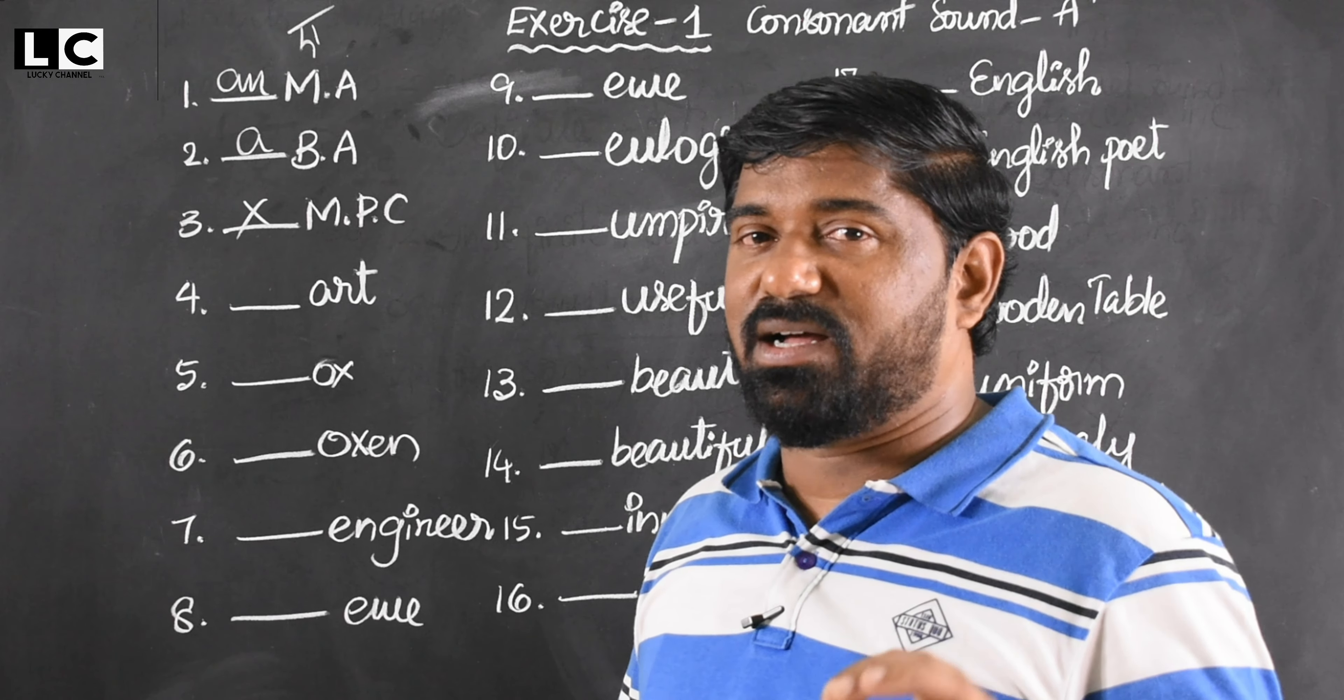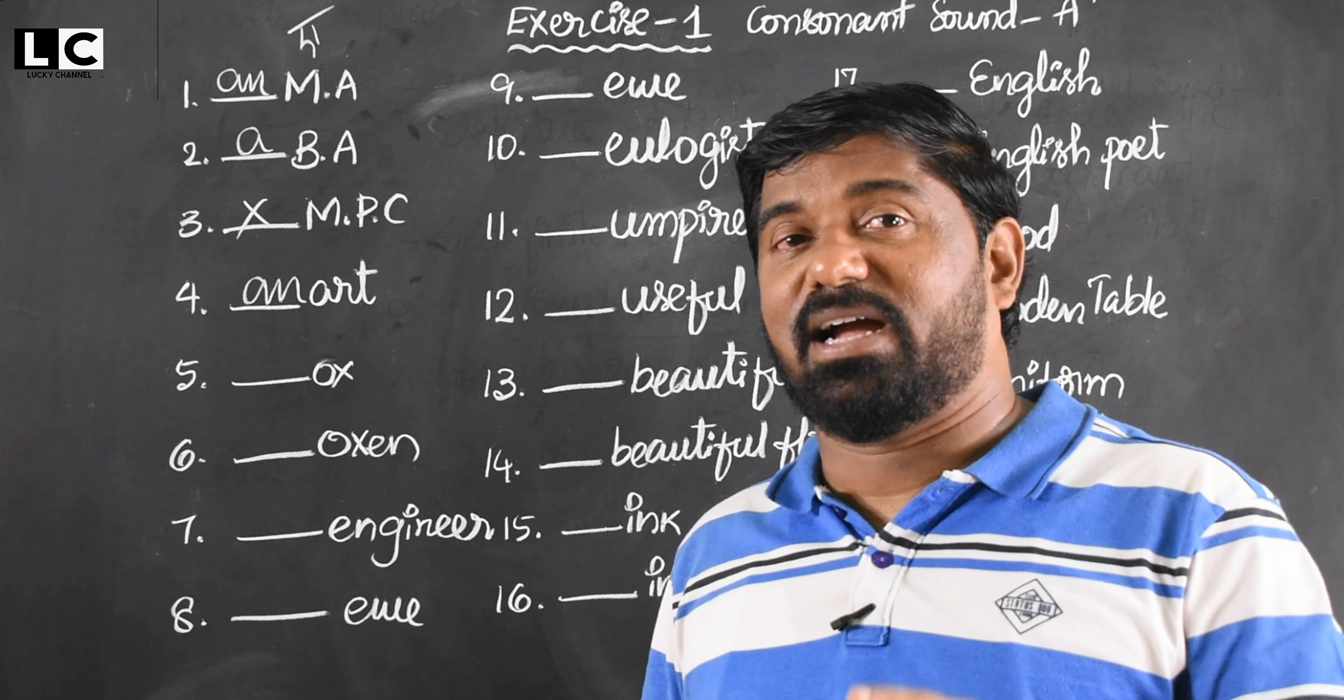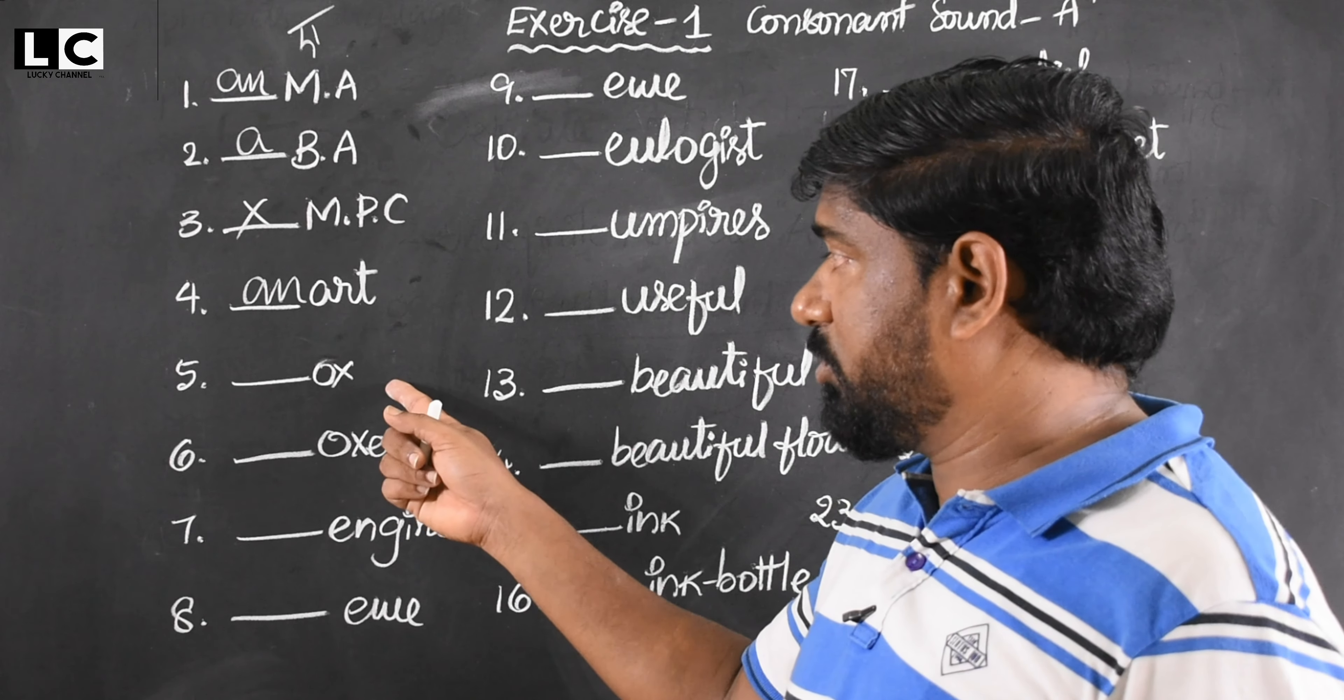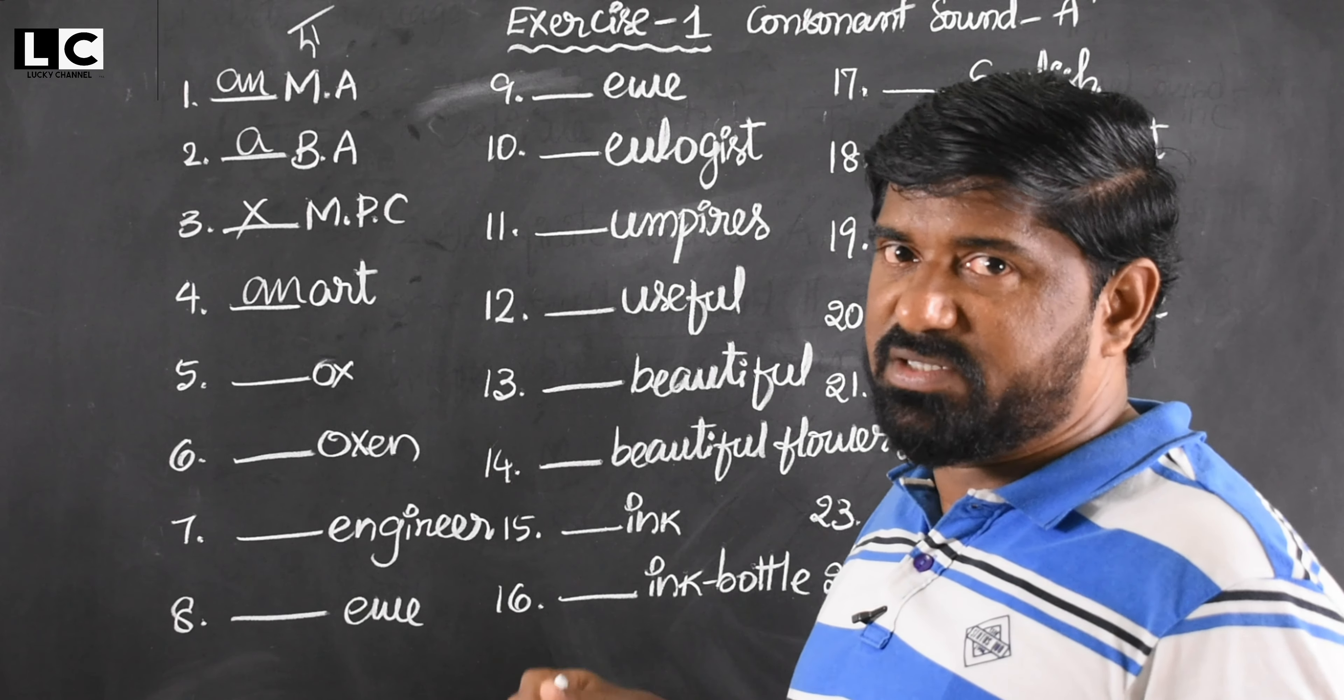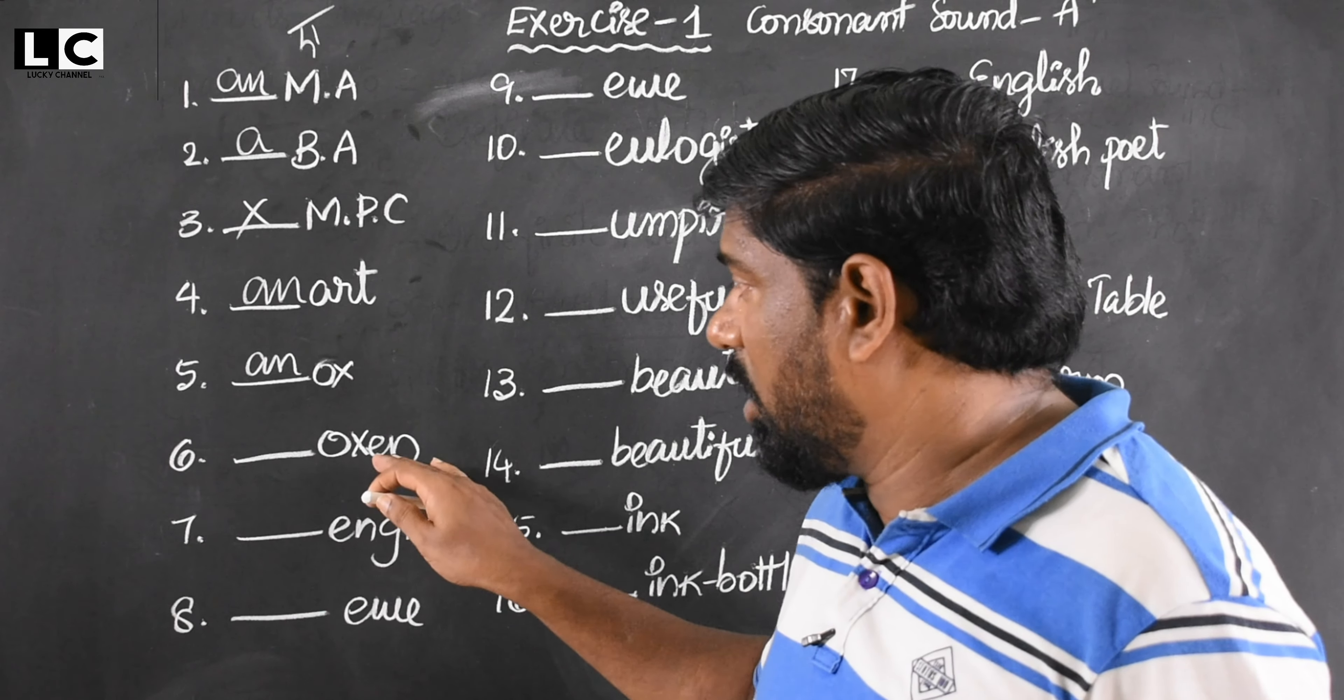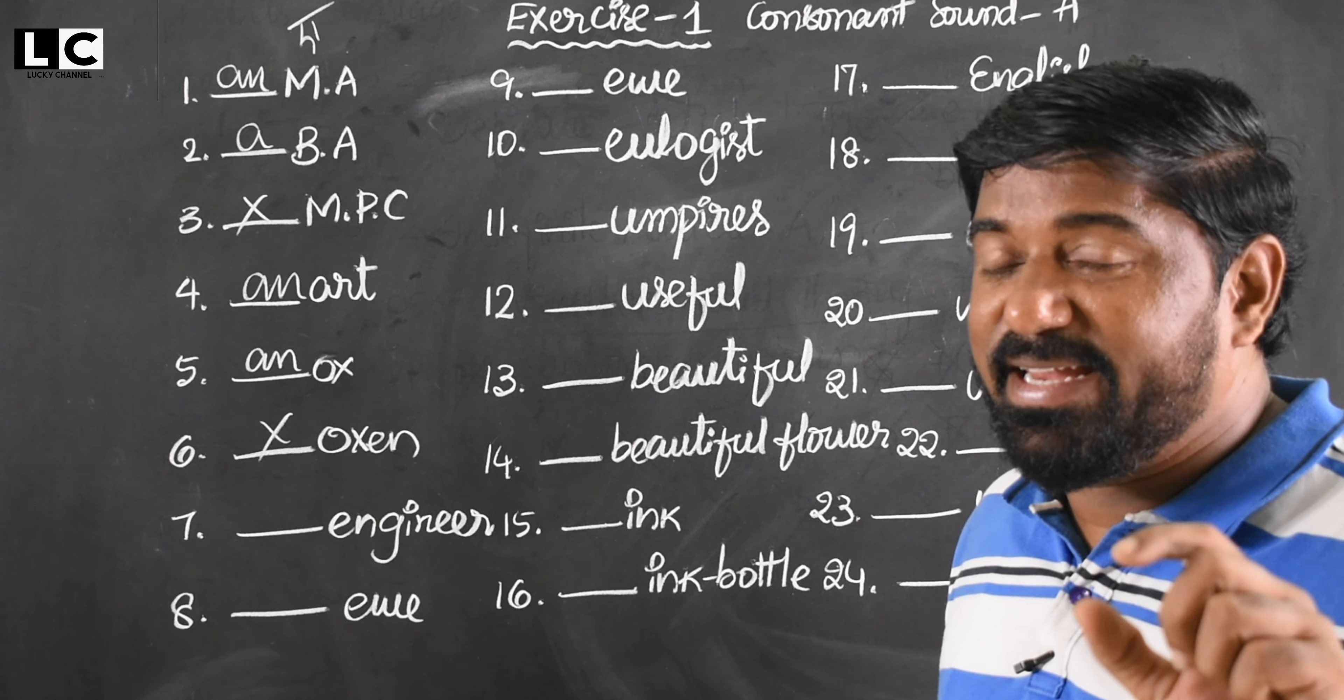Art - vowel sound, so an art. Drawing is an art, singing is an art, music playing is an art. Music - no article, music is uncountable. Ox - first sound is o, so an ox. But oxen is the plural form of ox, so plural form doesn't require article. Engineer - an, vowel sound, it's countable.